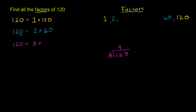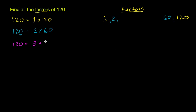3 goes into 12, 4 times. 4 times 3 is 12. Subtract, you're left with nothing. Bring down this 0. 3 goes into 0, 0 times; nothing left over. So it goes into it 40 times. The way to think of it in your head: this is the same thing as 12 times 10 — 12 divided by 3 is 4, so this is going to be 4 times 10. So we have two more factors: at the low end, 3; and at the high end, 40.